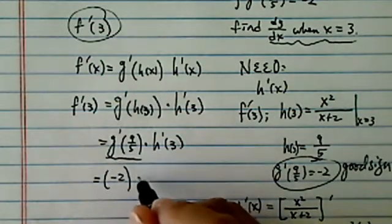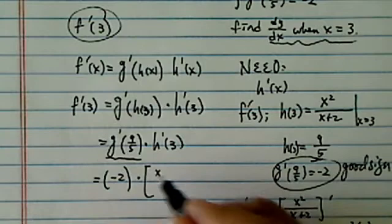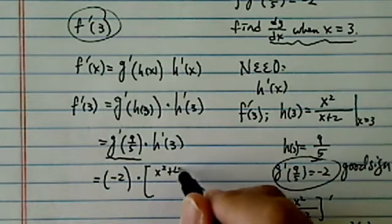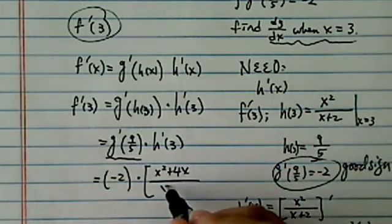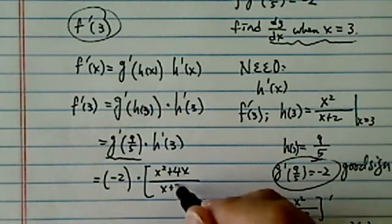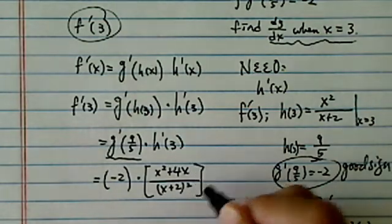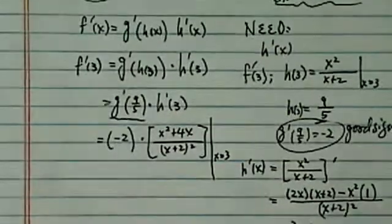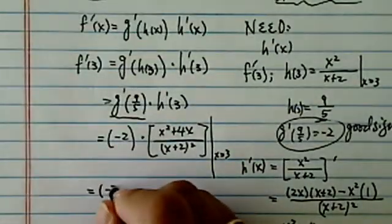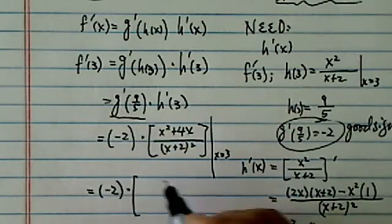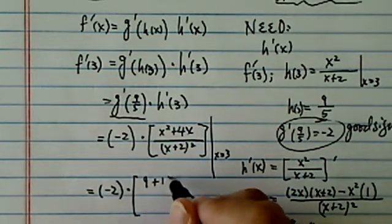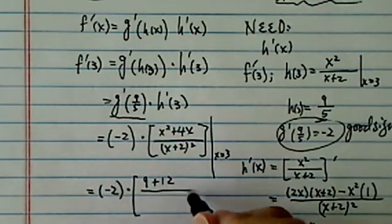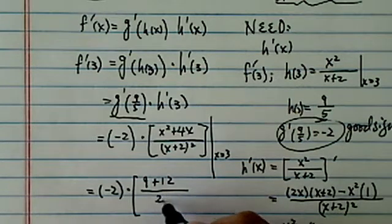Times h prime is equal to x squared plus 4x divided by x plus 2, the whole thing squared. We're going to evaluate at x equals 3. So let's carefully plug it in there. We're on the right track here. Minus 2 times 9 plus 12 on top, divided by 5 squared, which is 25.